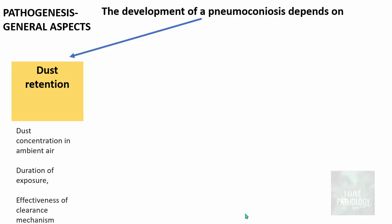Dust retention depends upon the amount of dust concentrated in the ambient air — the density of dust — as well as the duration of exposure. The longer the exposure, the more dust is retained in the lungs. It also depends on the effectiveness of our normal clearance mechanisms. If mucociliary clearance is damaged, particularly in individuals who smoke, more dust particles can gain entry into the lung spaces. Smoking is an important determinant in the development of pneumoconiosis.